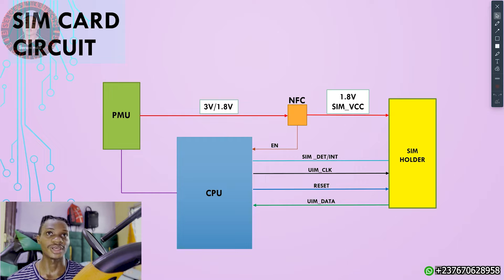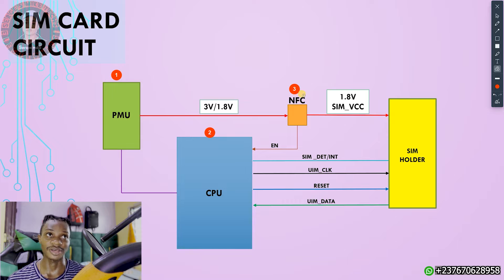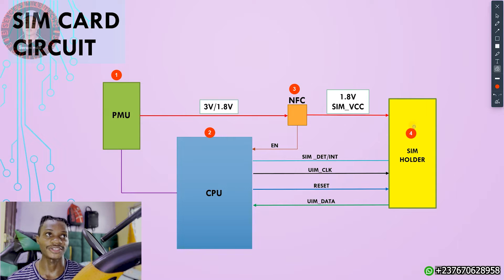In the SIM card detection circuit of a mobile PCB, we have the PMU IC, which is the power manager IC. We have the CPU. We have the NFC IC, which is the near field communication IC. And then we have the SIM card itself, which is the SIM card chip. The SIM card is a chip — you need to keep that in mind.